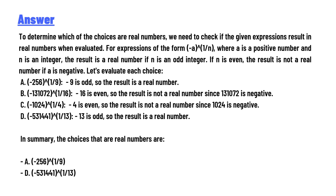C) (-1024)^(1/4) — four is even, so the result is not a real number since 1024 is negative. D) (-531441)^(1/13) — thirteen is odd, so the result is a real number.